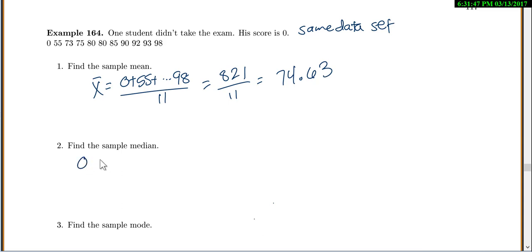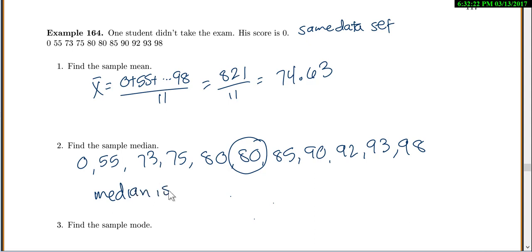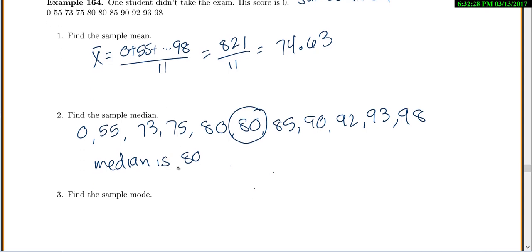To find the sample median, I'll go ahead and write them in order again. So they're in that order. Now I want to find the middle value. So I tick them off. So it looks like I have 5 on the bottom, 5 on top, and 1 left in the middle. So if I circle the 80, I have 5 on the bottom, 5 on top, so that's in the middle. So my median is 80. And to find the sample mode, I still have two 80s, that's the most common value, so 80.